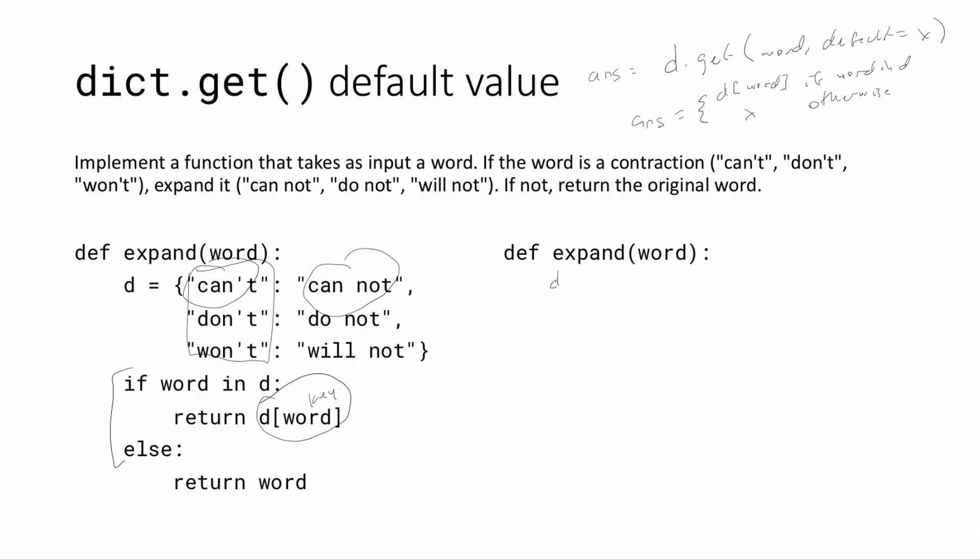And so that should give us a pretty good idea of how to go about doing this. And the way we do it is, again, I'm going to write this in multiple lines, and then we'll collapse it. But d, we're going to use the same old dictionary, and I'm not going to rewrite it. But d is the same dictionary over here - can't, don't, won't, whatever. But then the idea is we could just write something like return d.get.